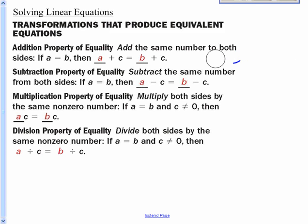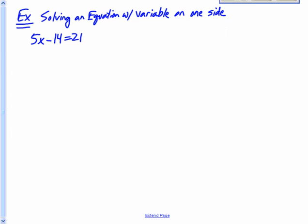We've got the subtraction property of equality. It just says if I have A equals B and I subtract 2 from one side, I've got to subtract 2 from the other side. I have multiplication property of equality similarly and the division property similarly except using those other operations.